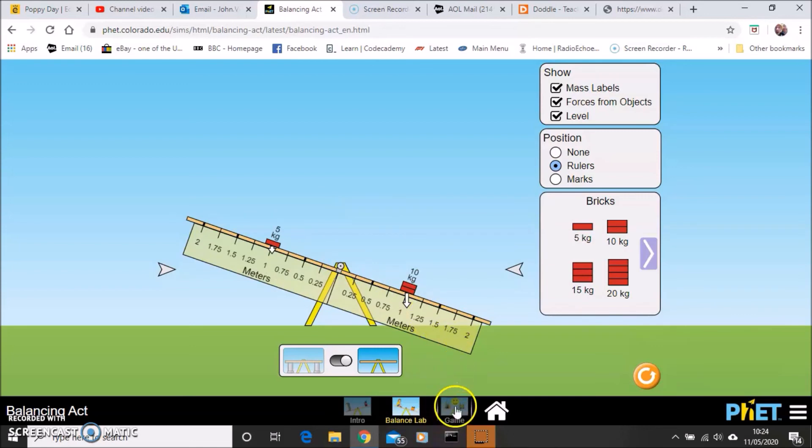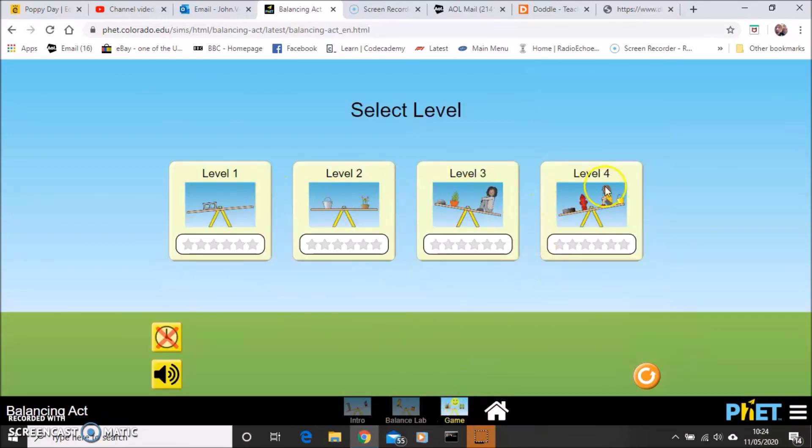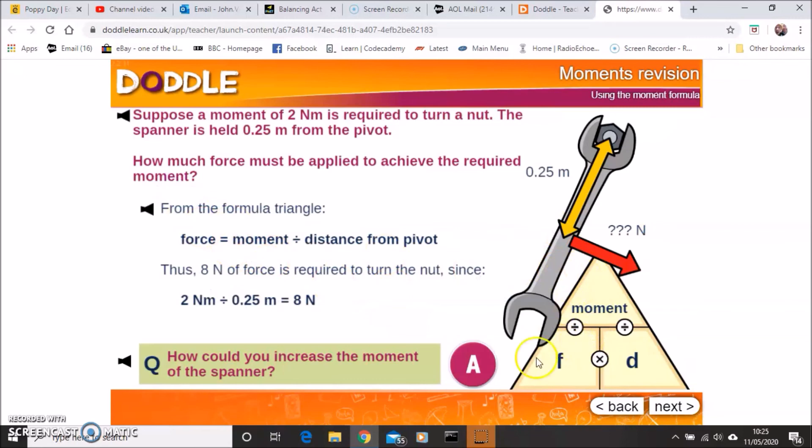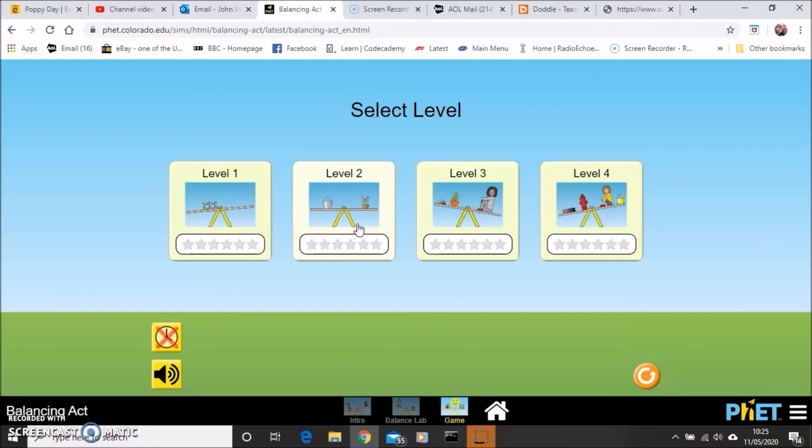Second thing I want you to do then have a little play with this second screen. The last little bit, once you're happy with all that and how that all works, move on to the game. And there are four levels to work through. Each time getting a little bit more complicated. You are going to have to bear in mind that equation that we looked at on Doddle. You are going to have to use perhaps your magic triangle. And it will get increasingly difficult. But like I said, have a little play with it. I'm going to give you two lessons to do this. And then we will go back to Doddle.